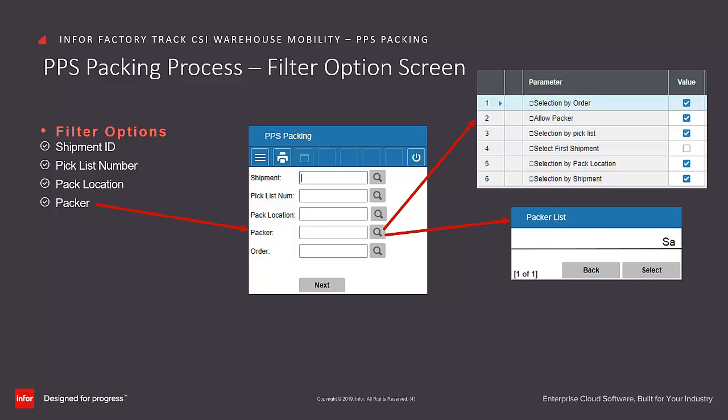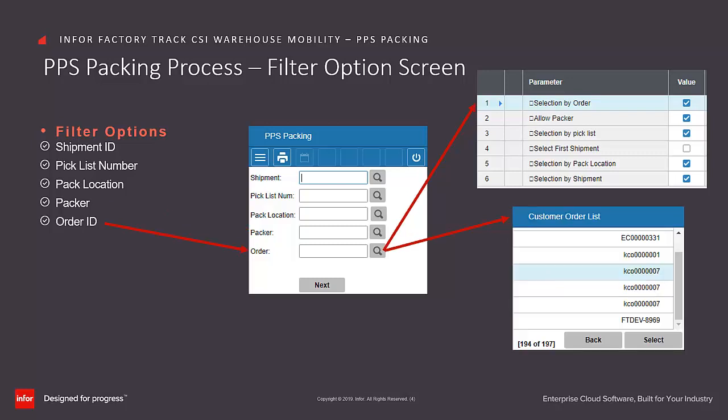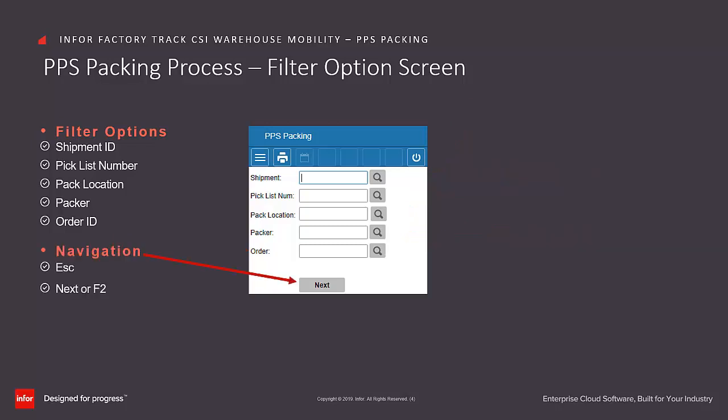The Packer field is made available if the Allow Packer option is selected in the transaction set maintenance form. You can enter, scan, or search the Packer ID. The Order ID field is made available if the Selection by Order option is selected in the transaction set maintenance form. Enter or search to select the Order ID, then click on Next to continue.